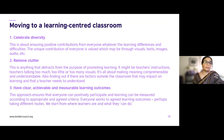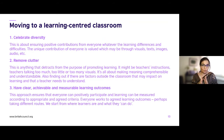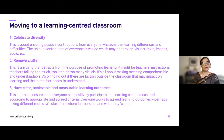Third: have clear, achievable, and measurable learning outcomes. Very often as teachers we want to do everything in one lesson, or we have very high expectations. Ensuring learning outcomes are clear, achievable, and measurable enables everyone to positively participate, and learning can be measured according to appropriate criteria. Everyone works to agreed learning outcomes, perhaps taking different routes, and we start from where the learners are and what they can do, rather than where we want them to go.